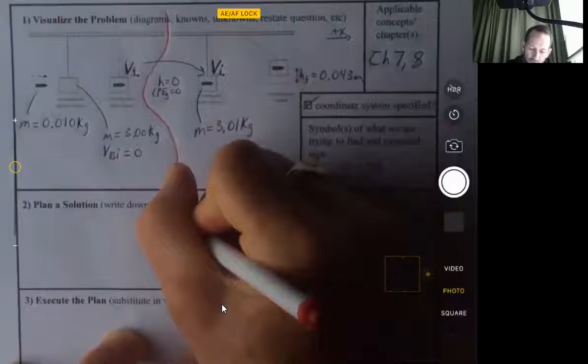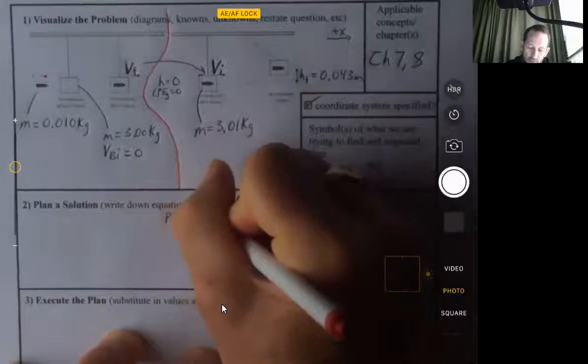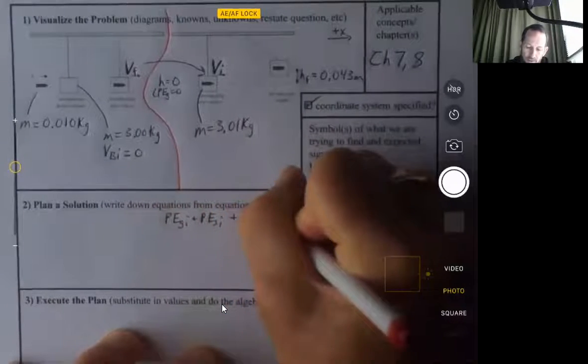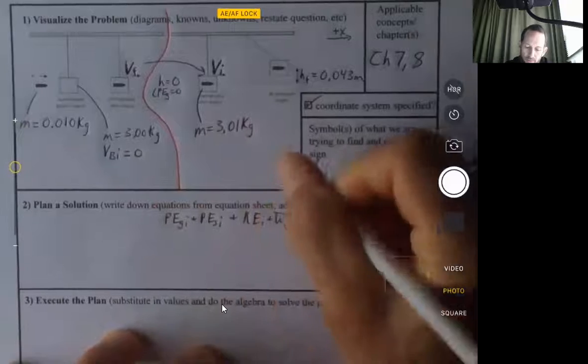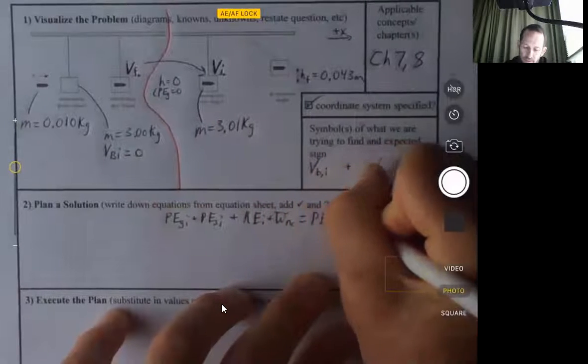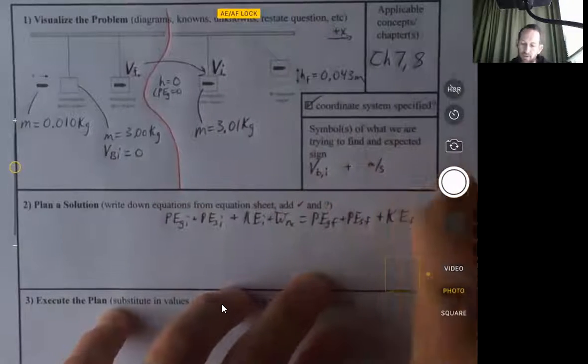So let's look at that. We can say PE-G-I plus PE-S-I plus KE-I plus work by non-conservative forces equals PE-G-F plus PE-S-F plus KE-F.